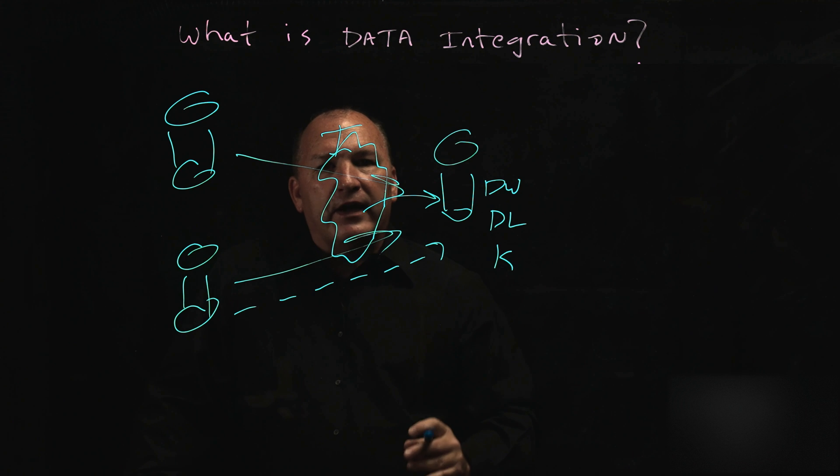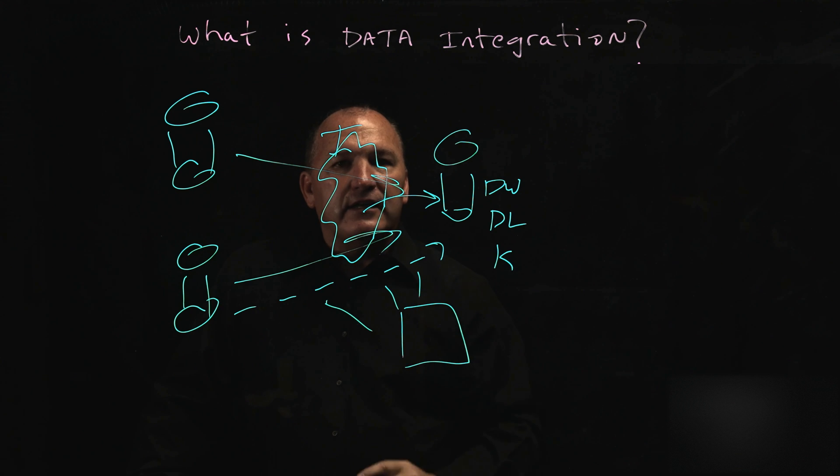And the third piece is around providing a robust data catalog. What the data catalog does is it captures all of the technical metadata along the way. And importantly, it provides a place that a business user can go find the data that they need, understand where it came from, and be able to publish that data out to whatever BI tool that they need, data science initiative, or use it in any way that they see fit.